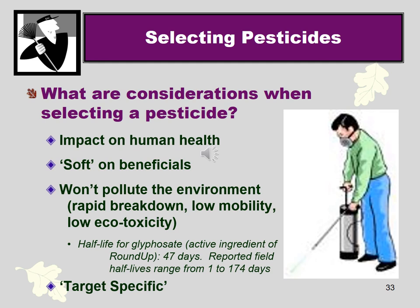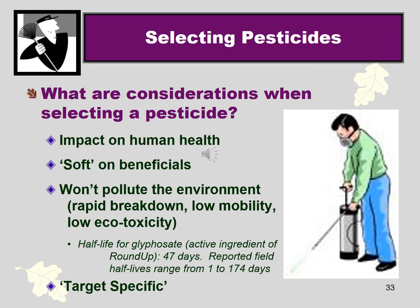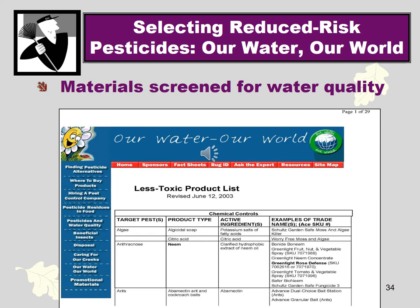Always consider the environmental and organismal negative effects of any pesticide you're using. There's great information online to find low-toxicity pest control chemicals, like the website 'Our Water, Our World.' Regarding weeds specifically, chemical control options include: corn gluten, which can help prevent weed seeds from sprouting; herbicidal soaps to knock down insect populations; vinegar or lemon juice, which kills a lot of weeds; hot water; clove oil; lemon oil derivatives; and Avenger, which is another chemical we've used.